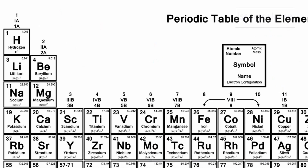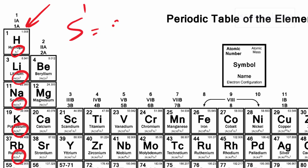If we look at the elements of the first column, as you can see, all of them their electronic configuration ends with S1, which means that all of them have one valence electron in their outer shell.